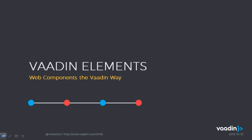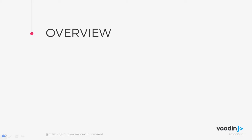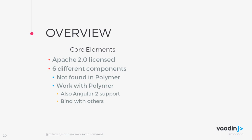This lecture is about Vaadin elements, so let's go through what they are. There are two offerings: one is core elements with Apache license — free and open source on GitHub — containing six different components designed to work with Polymer with a similar look and feel. Angular 2 bindings are also supported. The commercial offering is charts — a charting library displaying all sorts of charts, configurable and independent of the data source.